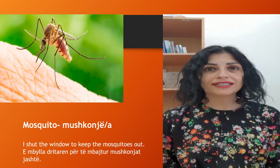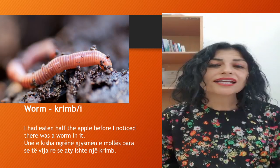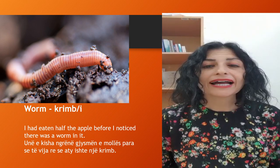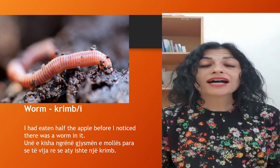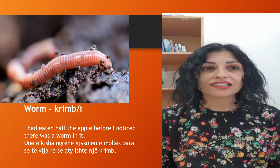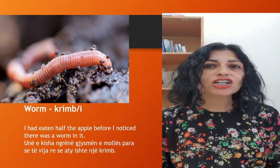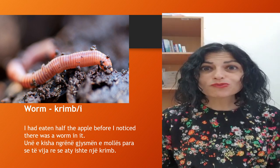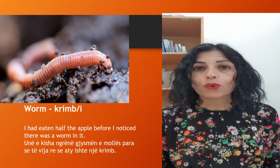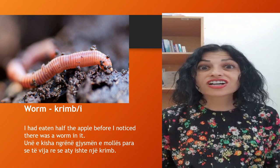The other one is the worm. In Albanian we say kërmbë — definite form kërmbi. For example, 'I had eaten half the apple before I noticed there was a worm in it.' In Albanian: unë e kisha ngrënë gjysmën e mollës para se të vëreja se aty ishte një krimb.